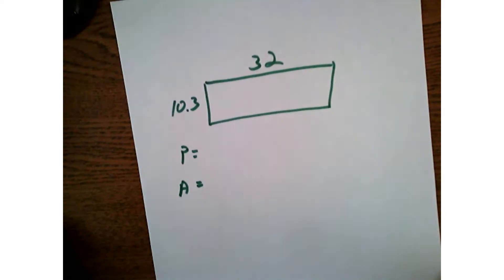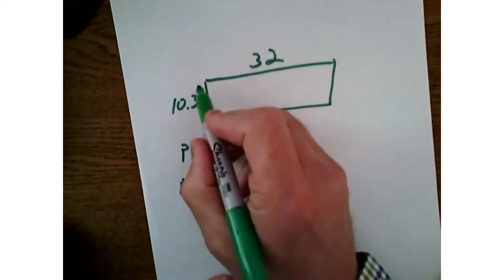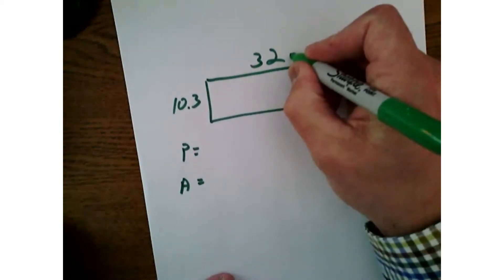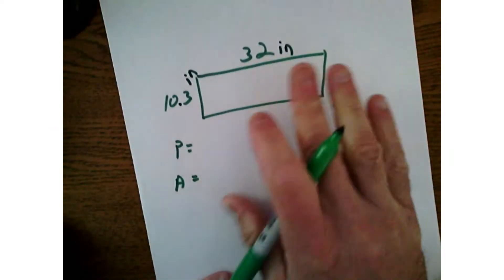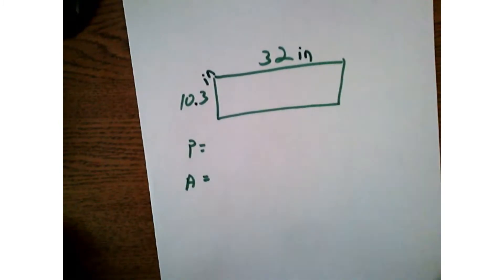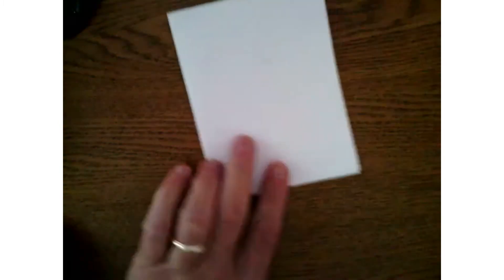So check it out. Let's pretend this is kind of what your homework looks like. You have a rectangle here with a length of 32, we'll give it inches, and a width of 10.3 inches. And you have to find the perimeter and the area. Let's stick with perimeter for now.